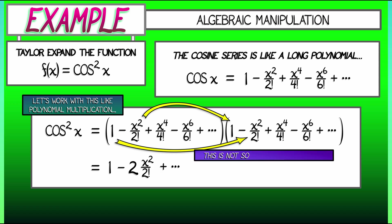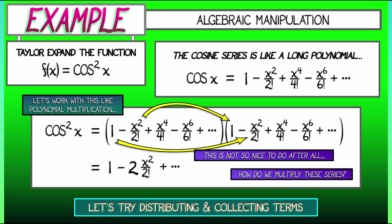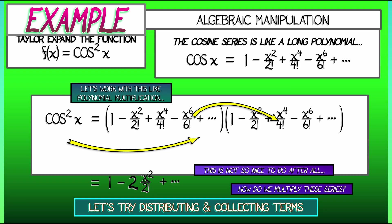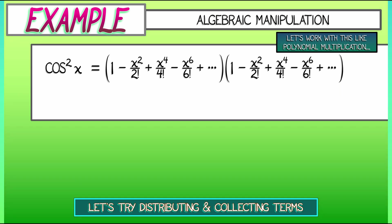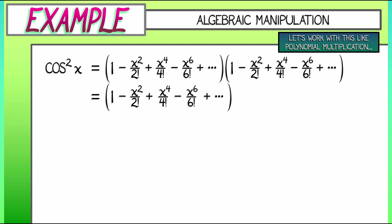Now, we can try distributing, try collecting terms, seeing what happens. So let's rearrange things. We have the cosine series times itself. I'm going to distribute that out by saying that this equals 1 times the cosine series minus x squared over 2 factorial times the cosine series. I've sort of run out of space to write this all down horizontally. So let's rearrange the terms. Let's stack them vertically.